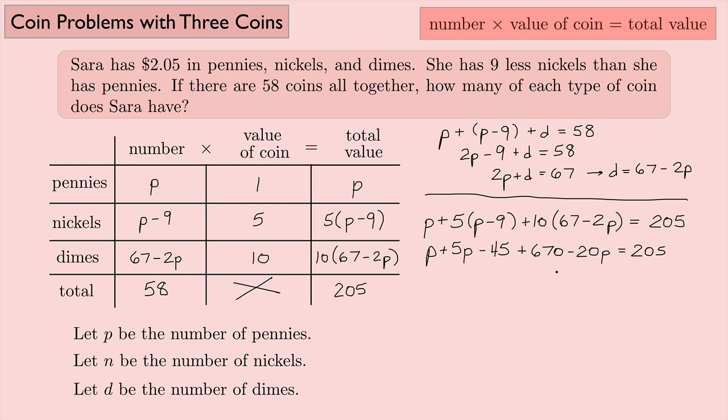Now I need to collect like terms here. So I have a negative 20P and I have a 5P and a P. These two together will be 6P. Then I have 670 minus 45, that's going to be 625. And I still have minus 20P equals 205. And then I have negative 20P and 6P, that's going to be negative 14P. Almost done here.